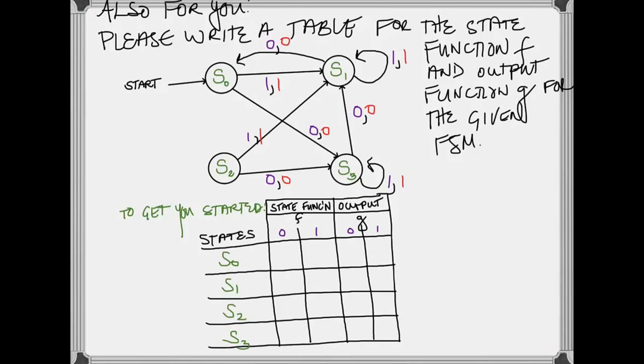How did you do? Did you see that starting at state 0 with an input of 0, you get directed to state S3? So that means the S0 input 0 entry of the transition function F better be S3.